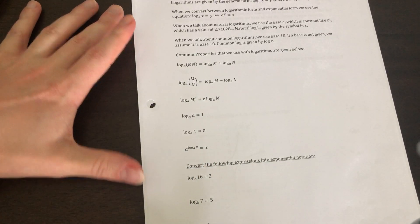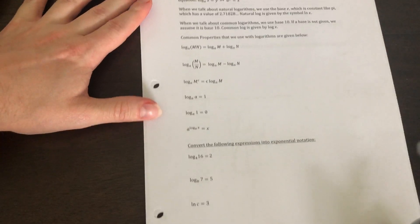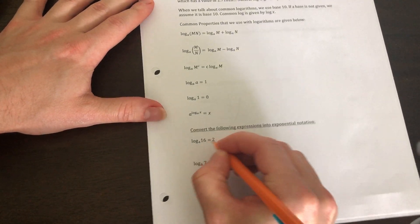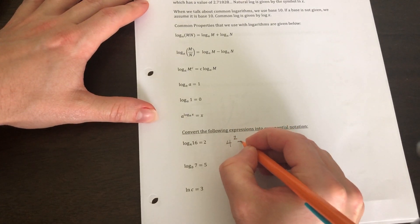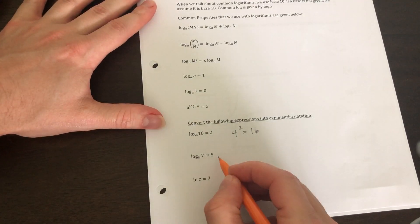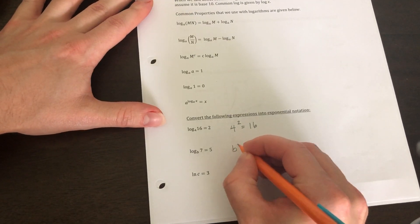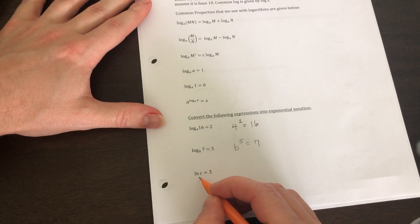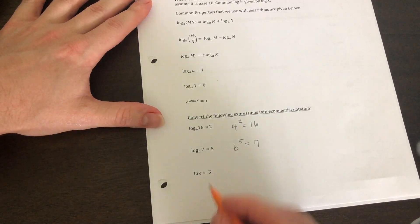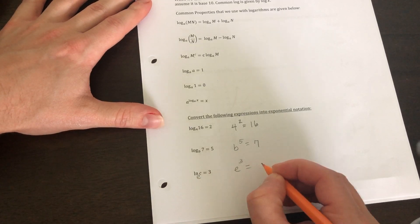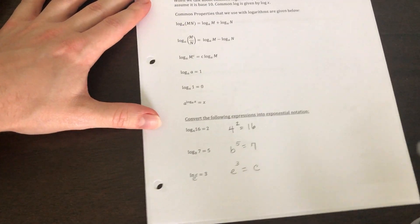Now on this section, it says convert the following expressions to exponential notation. So we're going to do base two to the two power is equal to 16. That's all there is to it. b to the fifth power is equal to seven. Since we're in natural log, it's going to be base e. So we're going to say e to the three power is equal to c. Nothing more than that. So we're just converting.